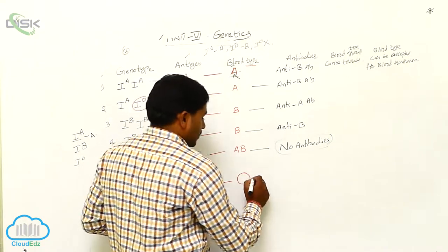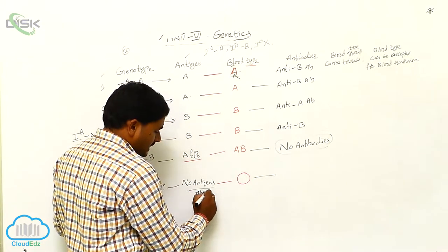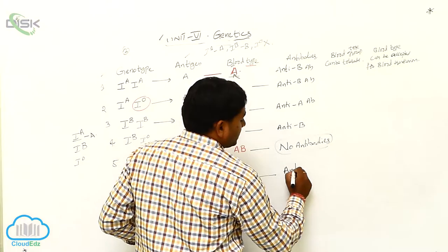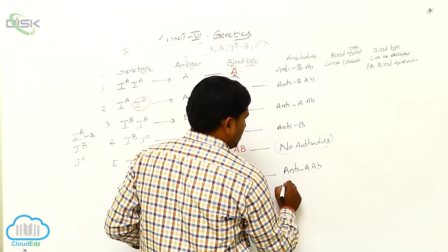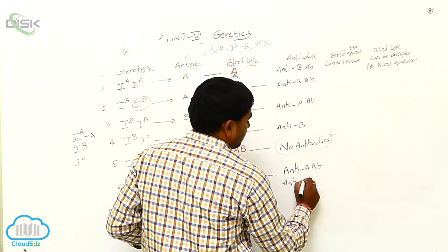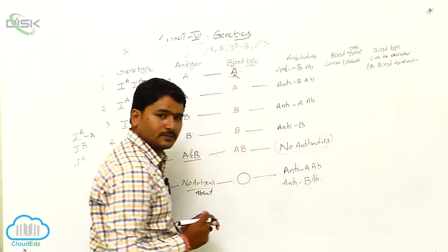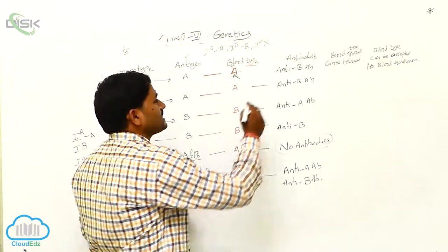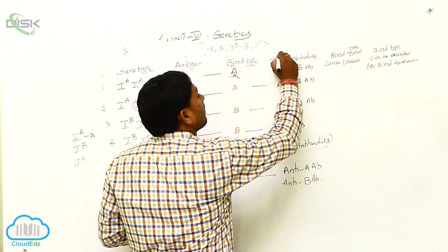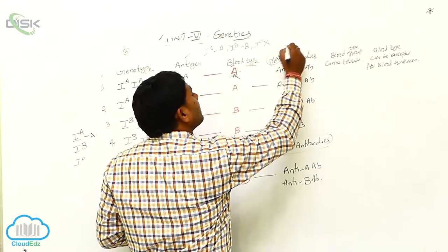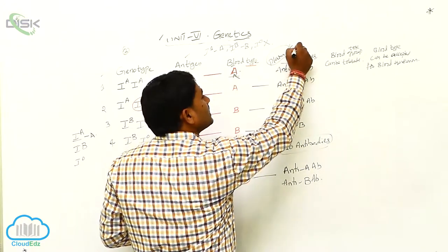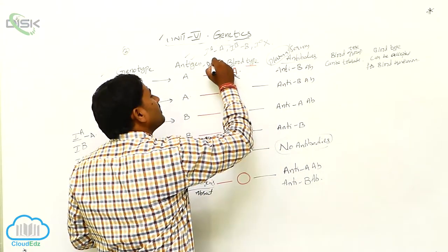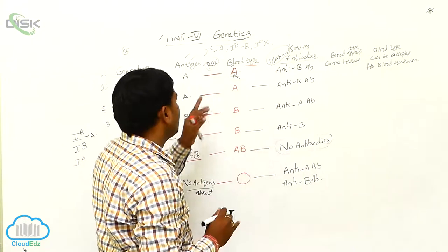When no antigens are present, that is blood group O, and since no antigens are there, both anti-A and anti-B antibodies are present. Antibodies are located in the plasma or serum, while antigens are located on the RBC membrane.